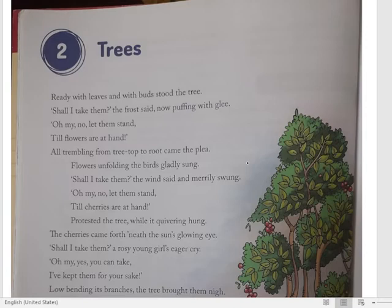What is the frost? Frost means — in winter, a layer of ice forms on the ground. We see it on the ground near the roots of plants. These buds are very soft and delicate. When frost falls on the ground, it settles like a layer on the grass. That is called frost — it appears when the winter season is very cold.